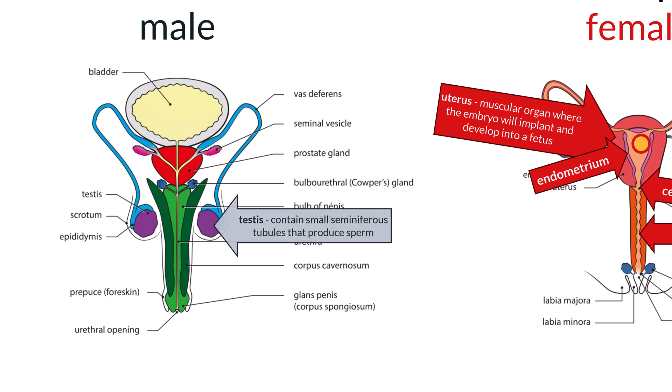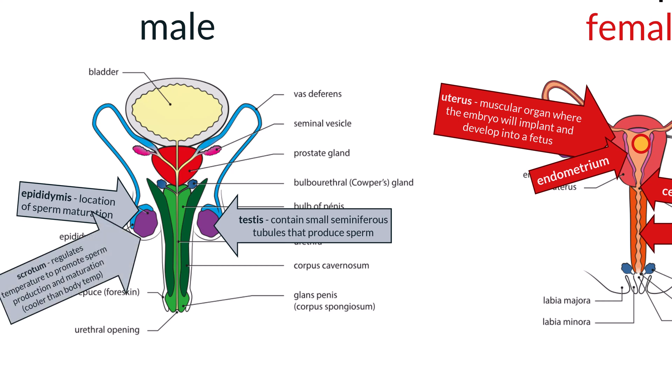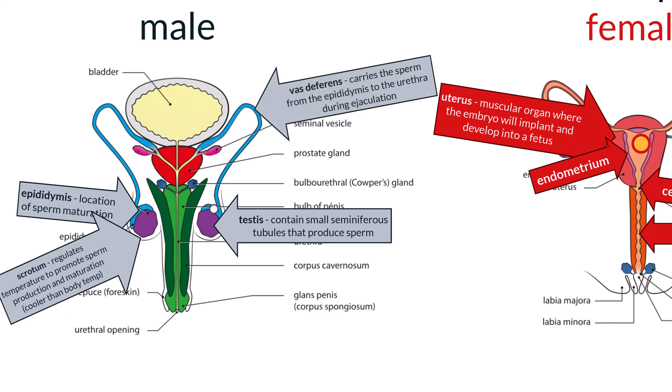Males have testes, which are composed of small tubes called seminiferous tubules. It is in these tubules that sperm are produced. The epididymis sits on top of the testes and is the place where sperm go after production to mature and become capable of swimming. Both the testes and the epididymis are located externally in a sac called the scrotum. This is necessary as sperm production and maturation are unable to occur at body temperature. A muscular tube called the vas deferens carries the sperm from the epididymis to the urethra during ejaculation. The urethra is the tube that goes through the penis and out of the body. The penis is the organ that becomes erect as a result of blood engorgement and allows ejaculation.